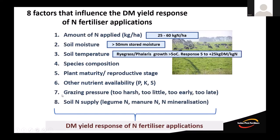Soil temperature matters — pasture growth for our grasses slows below five degrees, so the response over winter is typically less. But the value of that feed at critical times is different from spring. Responses can range from less than 5 kg of dry matter per kg of N up to over 30 kg of dry matter per kg of N in spring. Understanding how much response you'll get and what the value of that feed is, is really important.